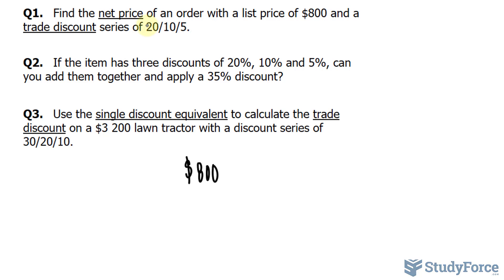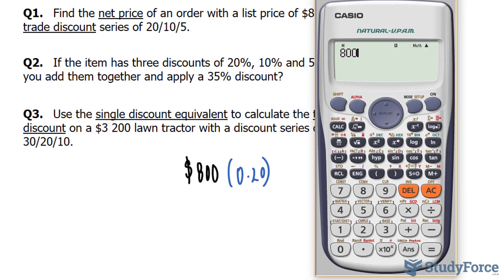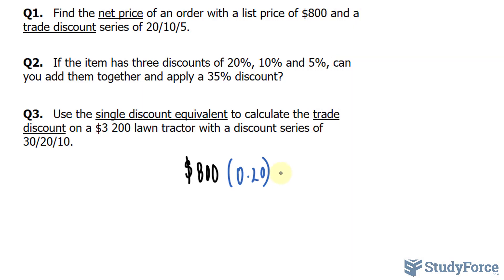Dividing 20 by 100 should get you 0.20. Let's use our calculator, 800 times 0.2 gives us 160. So our first discount is $160. We take this value now and subtract it from the original price of 800.